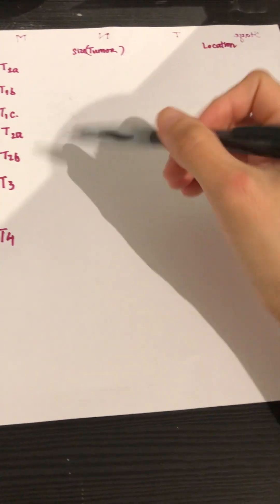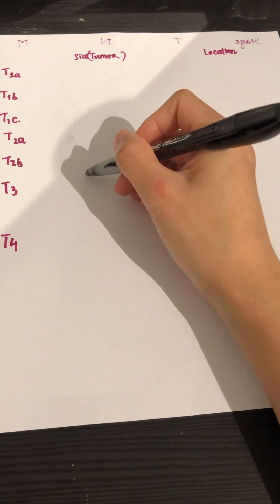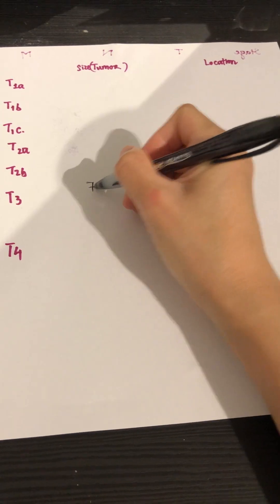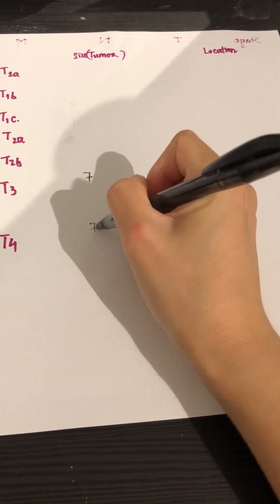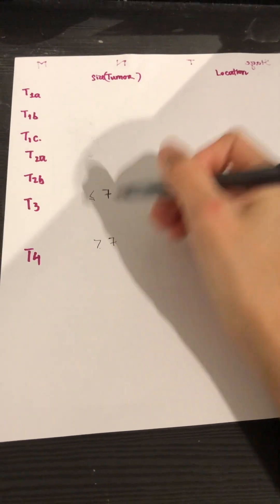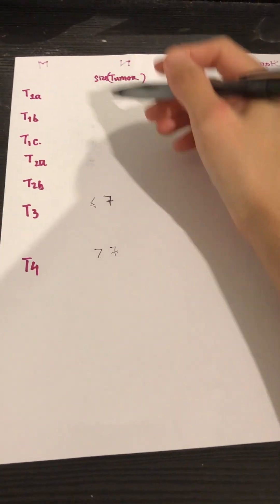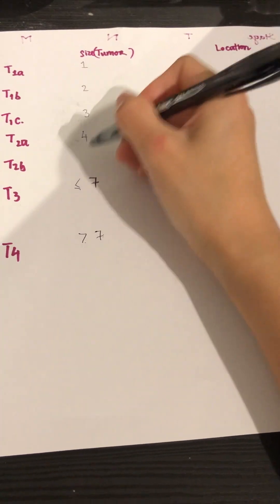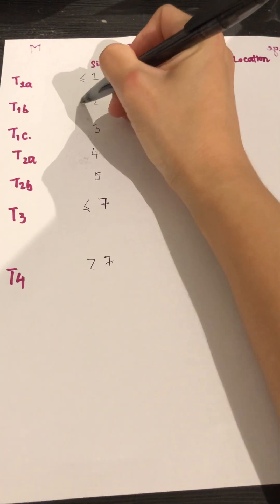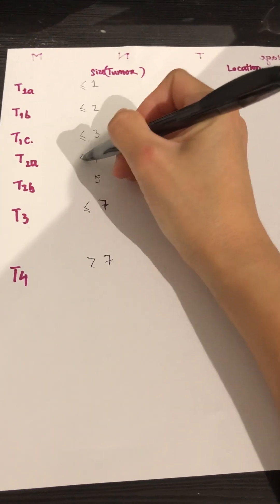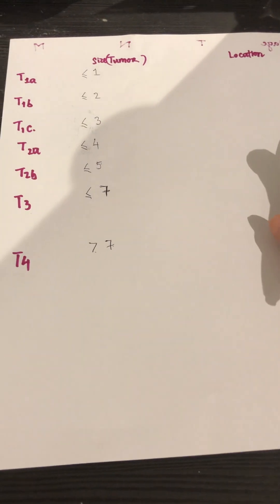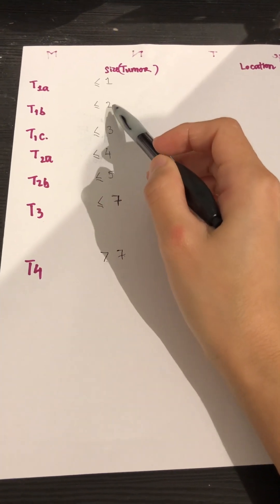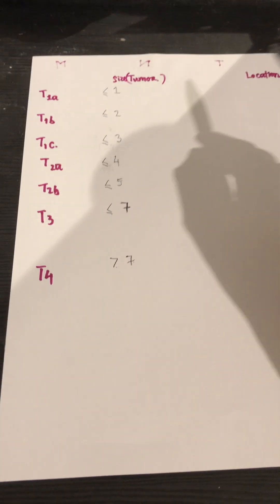All right, so to memorize the size, all you have to memorize is T3 and number 7 here. So 7, everything will flow from there. So 7, 7. And then T1A to T2B will be number 1 to 5. So 1, 2, 3, 4, 5. And of course, I don't draw it out here, but I assume that you would know. So T1C would be anything from 2.01 to 3 cm.